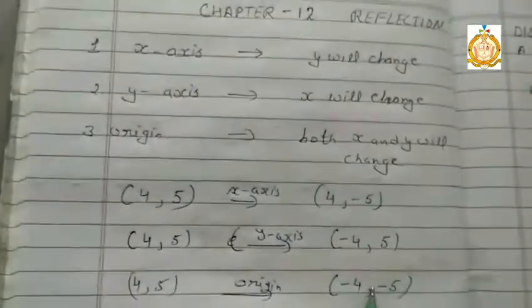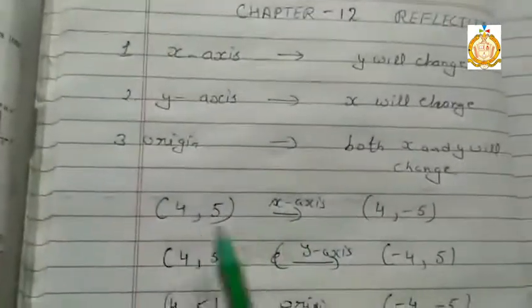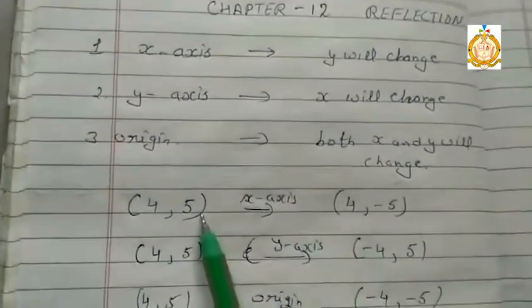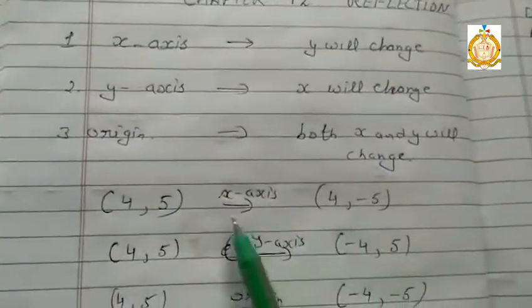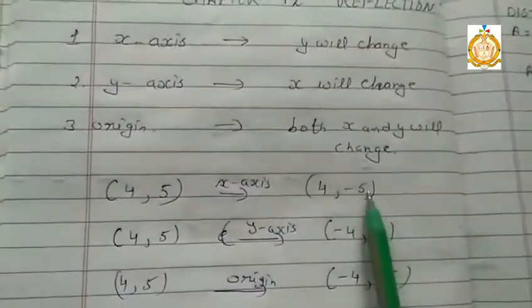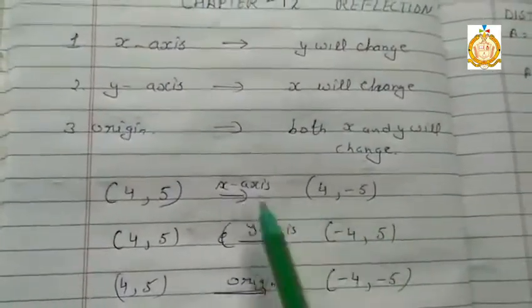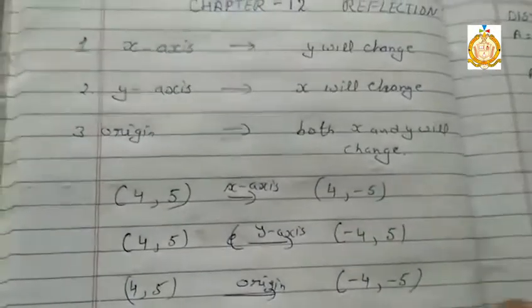Nothing to do, see students. Reflection means first we change the point (4, 5), then according to reflection we will change it. Now when I change the point, then just draw on the graph paper.